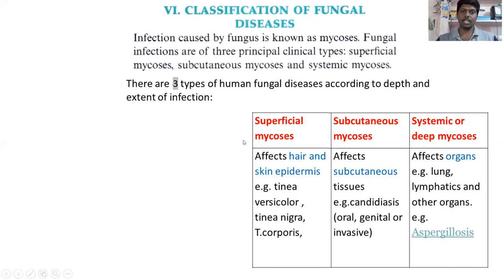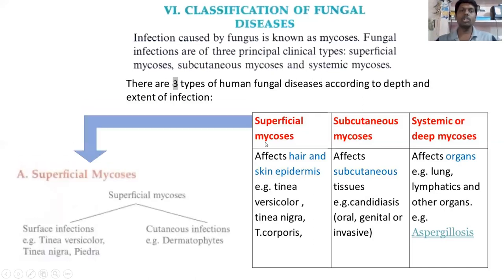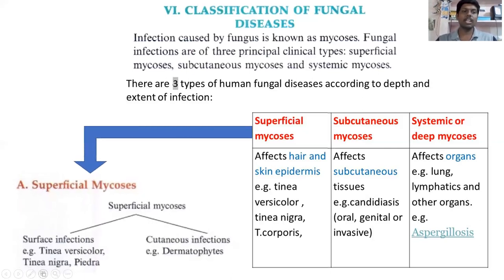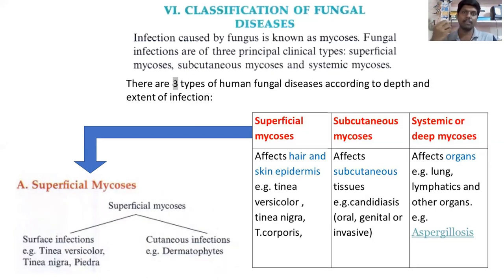Superficial infections are further classified into two types: surface infections and cutaneous infections. Surface infections only affect the surface of the body. Cutaneous infections go up to the cutaneous layer of the skin.